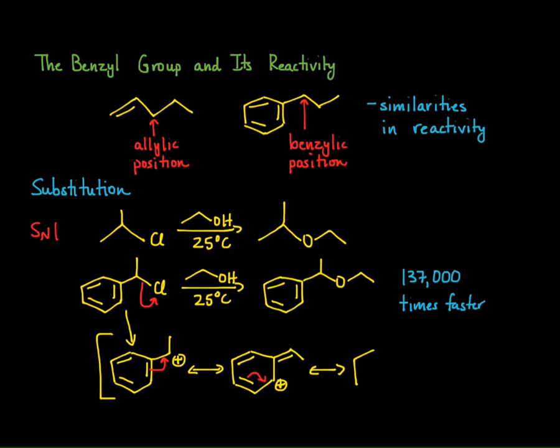When it does this, it has two other resonant structures. Here's one of them, where the positive charge is now on a different carbon. And then I can draw that last resonant structure. So I see that the intermediate carbocation is stabilized through four different resonant structures. Because of that, we know that the intermediate is going to be at a lower energy, and therefore, it's going to be easier to get to that energy. Hence, it's going to be faster in terms of its overall reactivity.